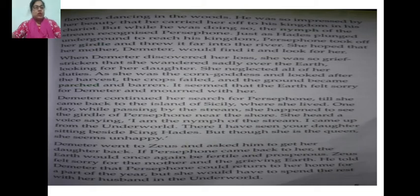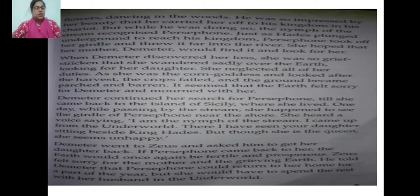Though Persephone is the queen, she seems unhappy. Demeter went to Zeus and asked him to get her daughter back, saying that if Persephone came back to her, the earth would once again be fertile and prosperous. Hearing this, Zeus felt sorry for the mother and the grieving earth. He told Demeter that Persephone could return to her home for a part of the year — for a few months — but she would have to spend the rest with her husband in the underworld.